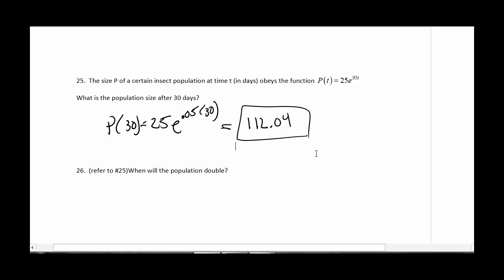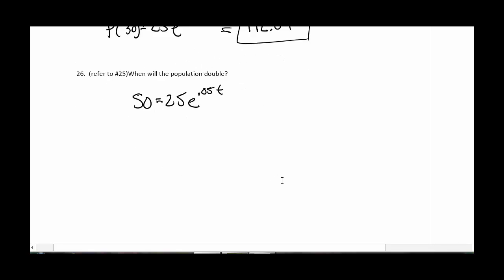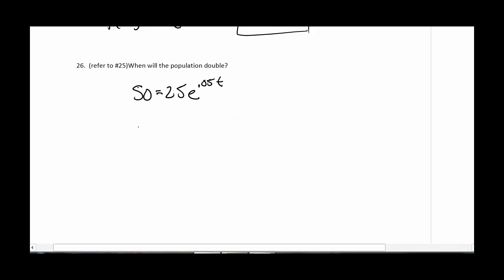And then number 26, when will the population double? Well, if it's at 25 when it starts off, that's what that 25 means. That's our starting off population. So how long until it takes until it reaches 50? Okay, so now we're solving an equation of some type. So I'm going to divide by 25. So we get the 2.